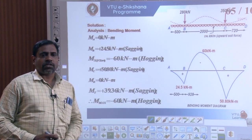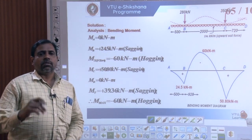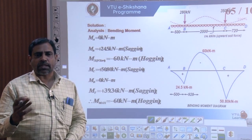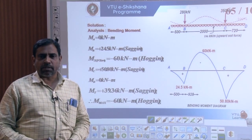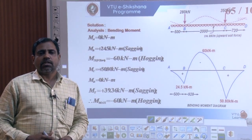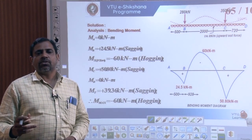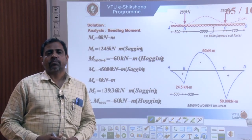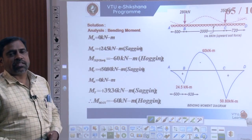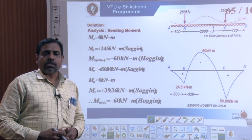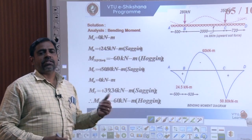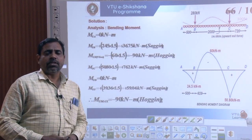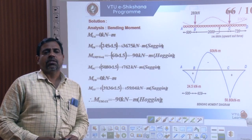We have the summary of the analysis as shown on the board, where the bending moment at A is 0, at B is 24.5 kNm (sagging), the maximum bending moment is 60 kNm, and at exactly point C the bending moment is 50.80 kNm. The transverse bending moment is 39.36 kNm.